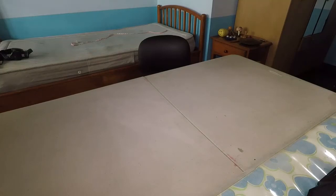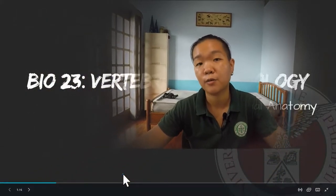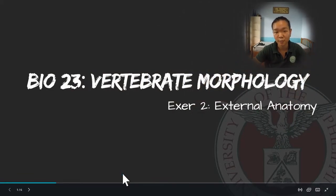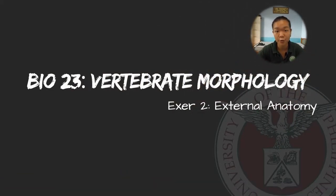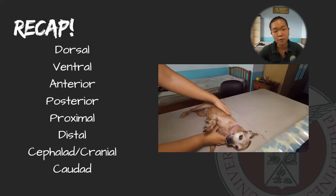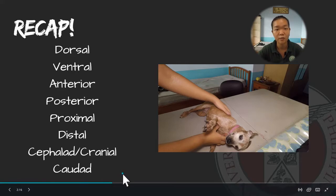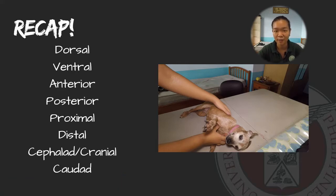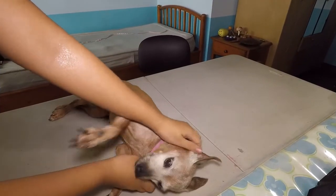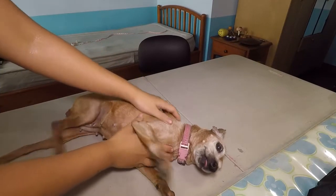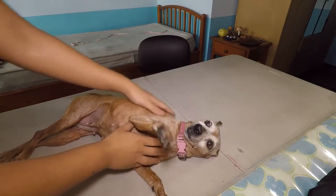To help us discuss body orientation, I brought in my little friend. Hello everybody, and welcome to Exercise 2 of Bio 23 Laboratory. Today we will be talking about external anatomy. We will first have to learn a few terms that you may come across in your lab manuals, particularly referring to the animal's body orientation. I brought with me my very lovely baby to help us understand animal body orientation.